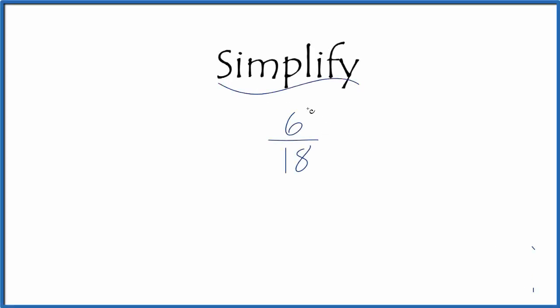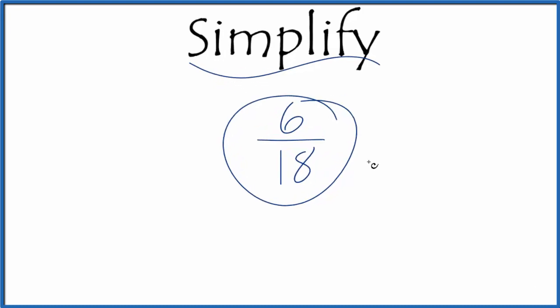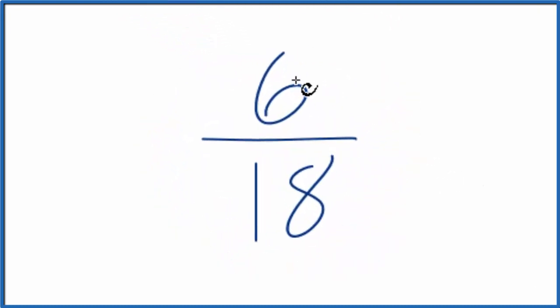Let's simplify the fraction 6 eighteenths. Here's how we do it. So what we want to do is get 6 over 18 in its lowest terms. We want an equivalent fraction that we've reduced or simplified to its lowest terms.